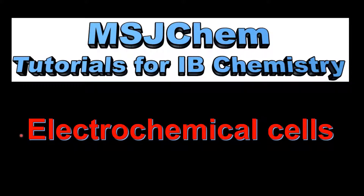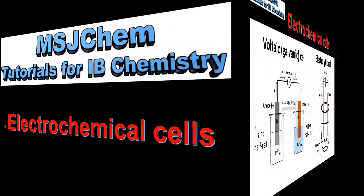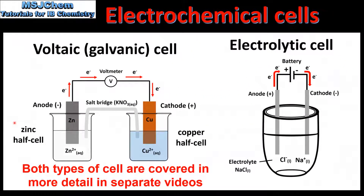This is MSJChem. In this video I'll be comparing electrochemical cells. The two types of electrochemical cells featured in this video are voltaic cells and electrolytic cells. On the left we can see a voltaic or galvanic cell, and on the right we can see an electrolytic cell.